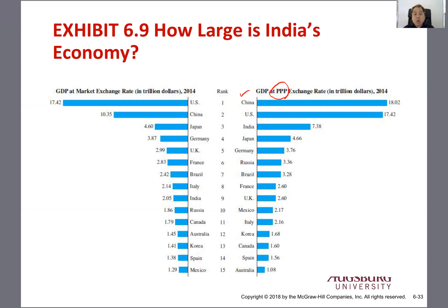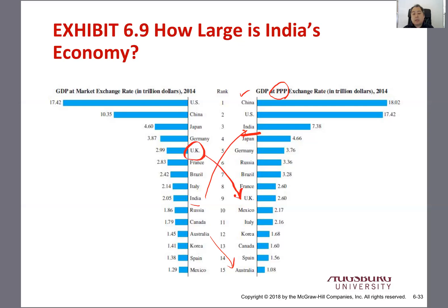Then India is now third — a huge rise from 9 to 3 — because the Indian price level is quite low. Japan is fourth. Then Germany, Russia, Brazil, France, UK, Mexico, Italy, Korea, Canada, Spain, Australia. For example, the UK dropped from 5 to 9 because the price level of the UK is pretty high.